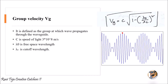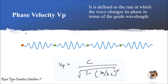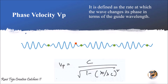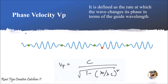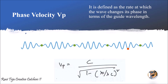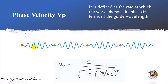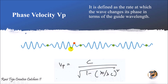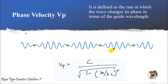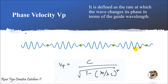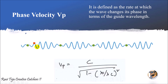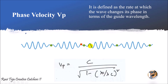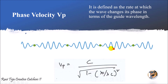Phase velocity vp is defined as the velocity or the rate at which the wave changes its phase. If you observe this waveform, the red dot keeps changing its phase as the wave moves along the waveguide.